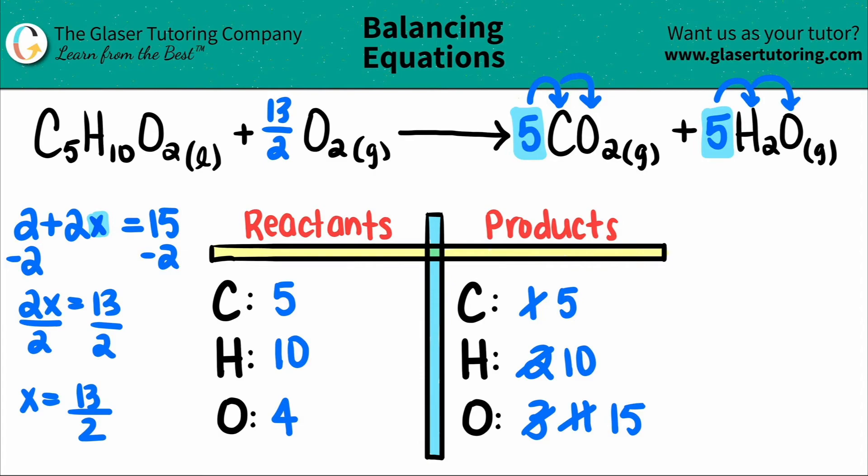But here is the catch. Whenever you finish with the fraction, you have to turn the fraction into a whole number. And it's pretty easy to do that. Whatever the denominator is, in this case it's a two, that's what you're going to multiply the entire equation by. So since this denominator is two, I'm going to multiply the whole equation by two.